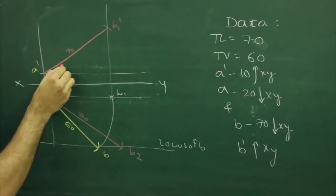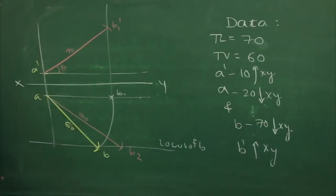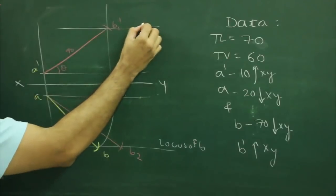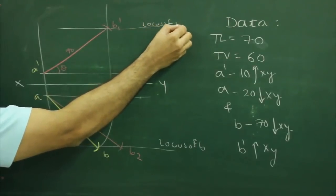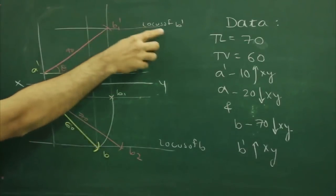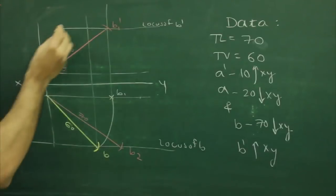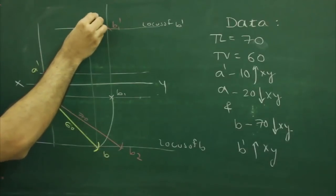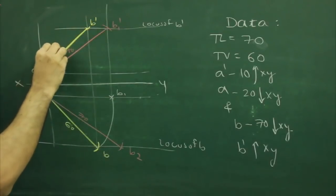So we get angle theta. Then we can draw locus of B' and we can project B straight up to the locus of B'. Wherever it will cut, it will be B' and this will be our front view.